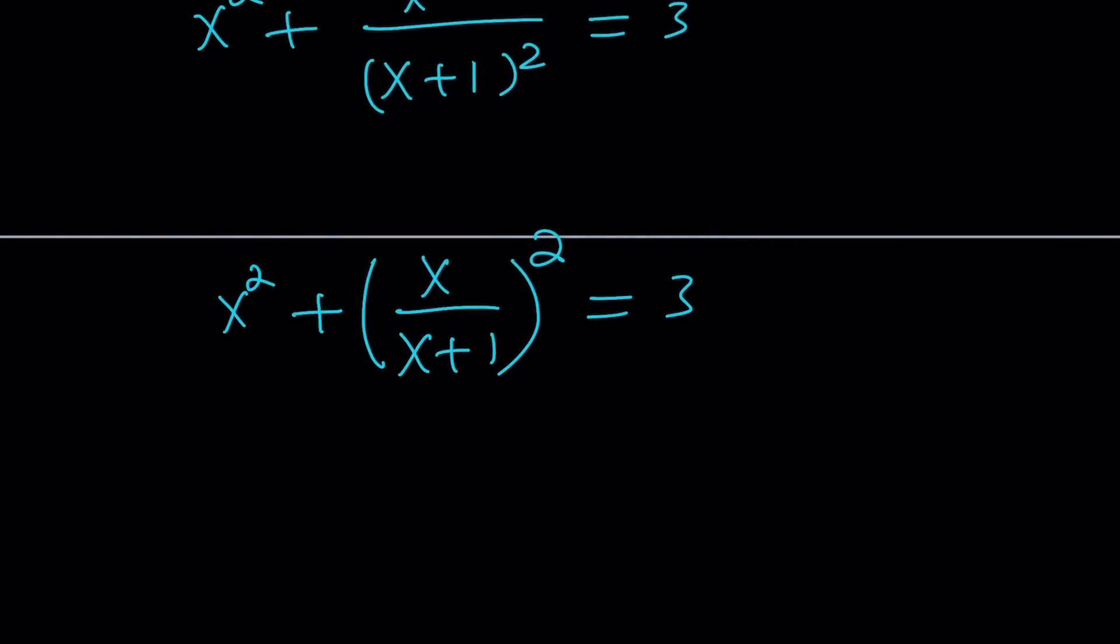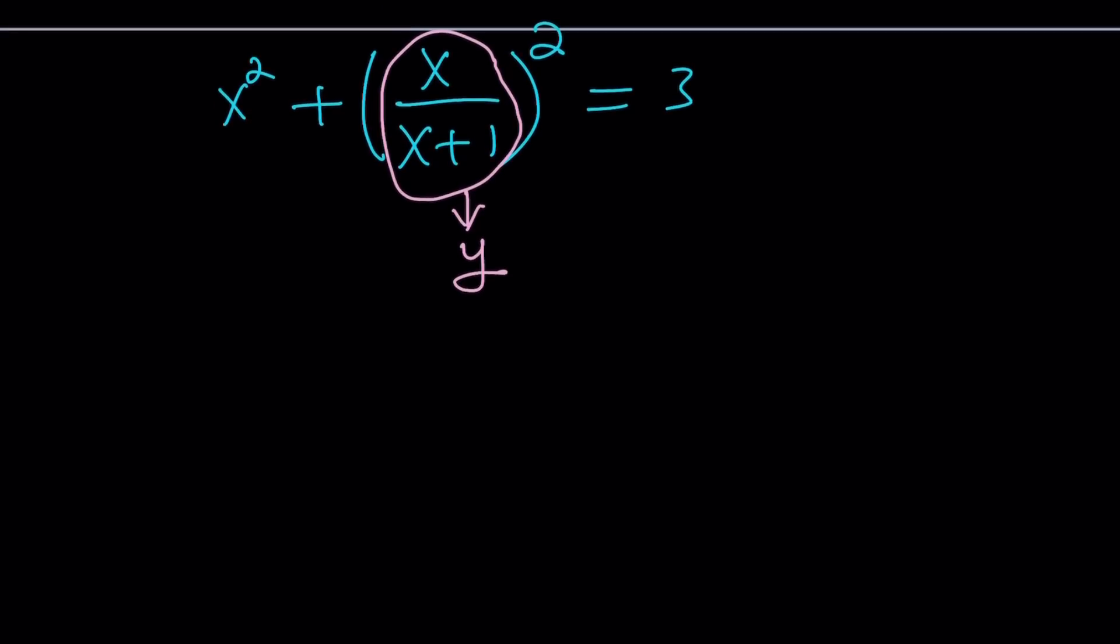So since I have something inside the parentheses let's call that y. You're like why are you calling that y? Because I chose y as my variable. And this gives us a simplified version of this equation: x squared plus y squared equals 3. But you just introduced another variable. Yes, but that variable is related to x, it's not a standalone.